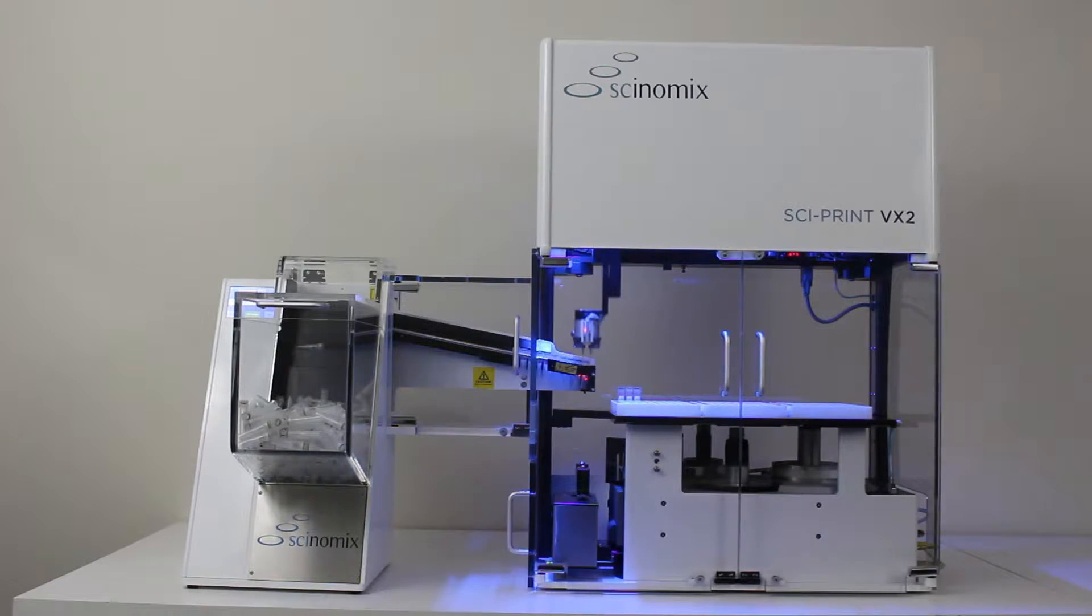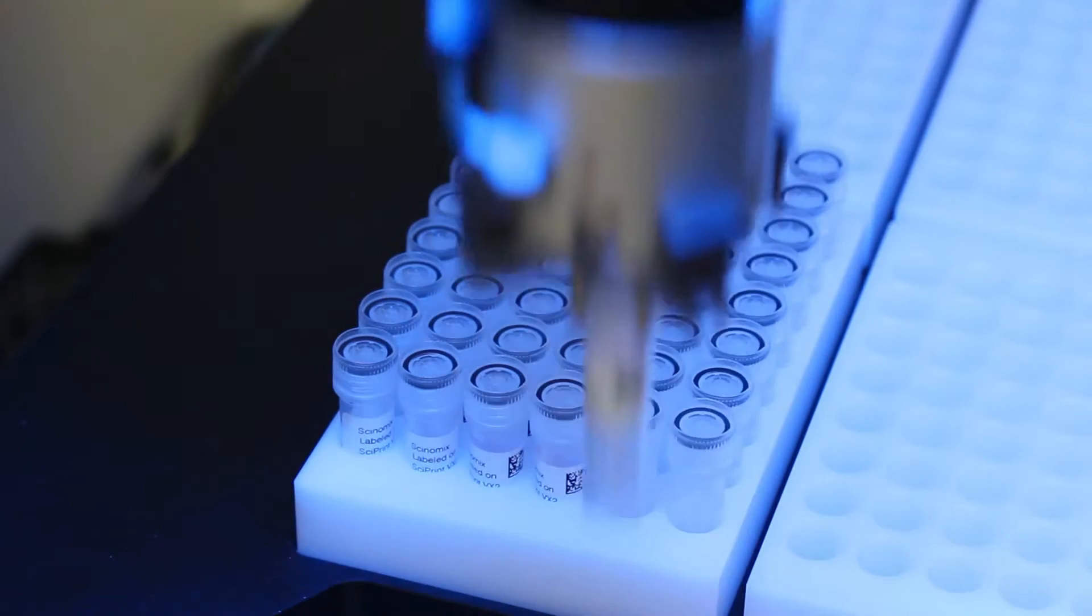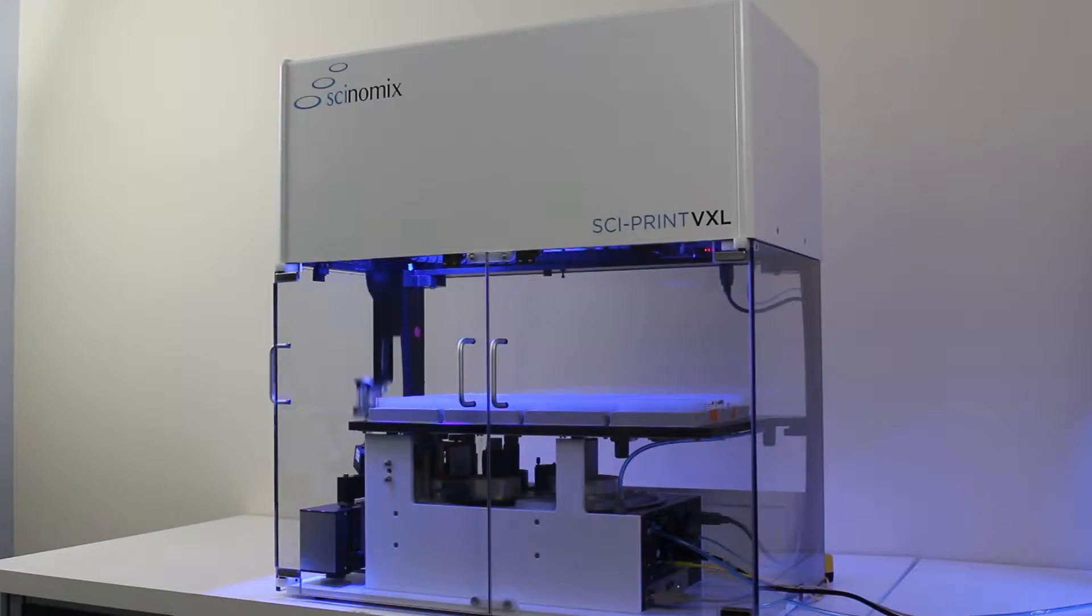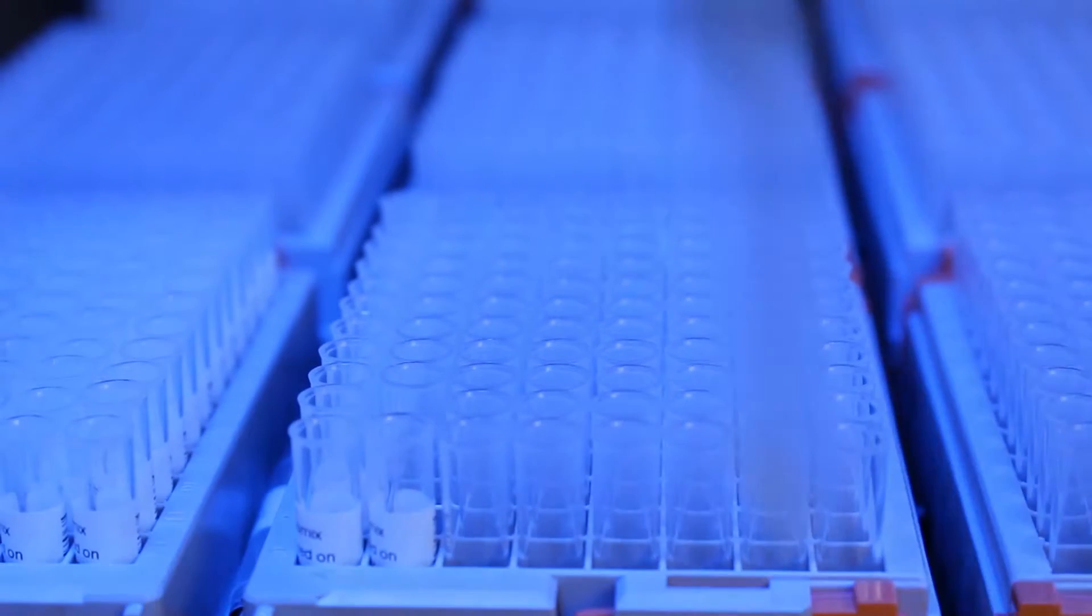The SciPrint VX2 fully automated vial labeler has a 6-position work deck that accommodates up to 600 tubes. The SciPrint VXL fully automated vial labeler has a 12-position work deck that accommodates up to 1200 tubes.